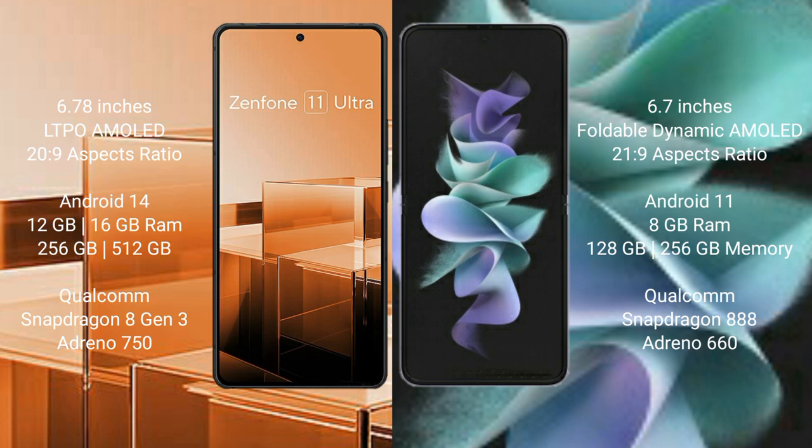The Asus Zenfone 11 Ultra comes with 12GB or 16GB RAM and 256GB or 512GB internal storage, powered by the Qualcomm Snapdragon 8 Gen 3 processor with Adreno 750 GPU. The Samsung Galaxy Z Flip 3 comes with 8GB RAM and 128GB or 256GB internal storage, with a Qualcomm Snapdragon 888 processor and Adreno 660 GPU.